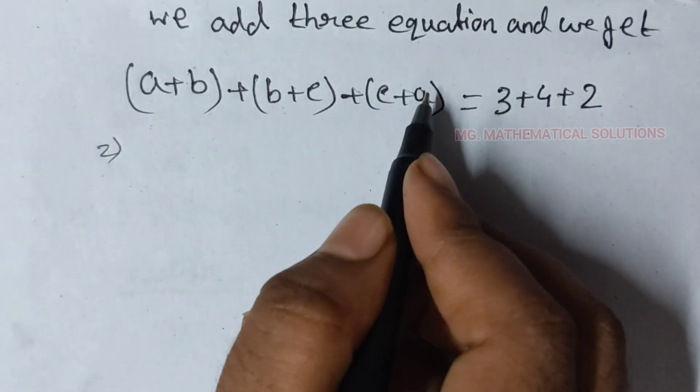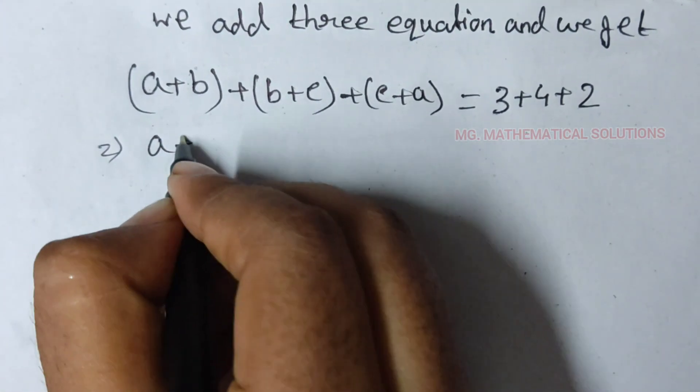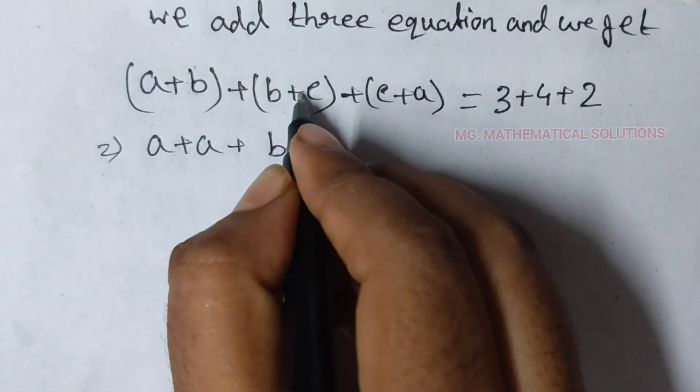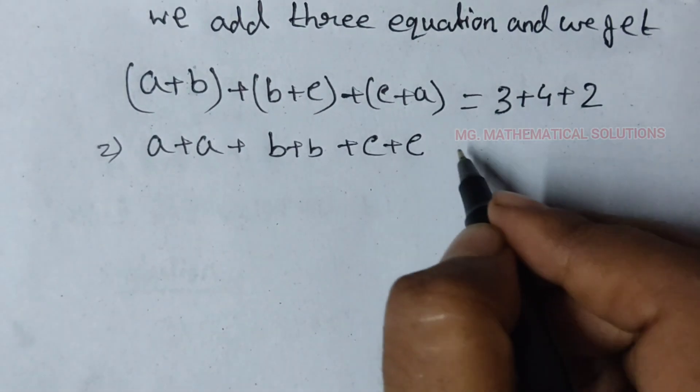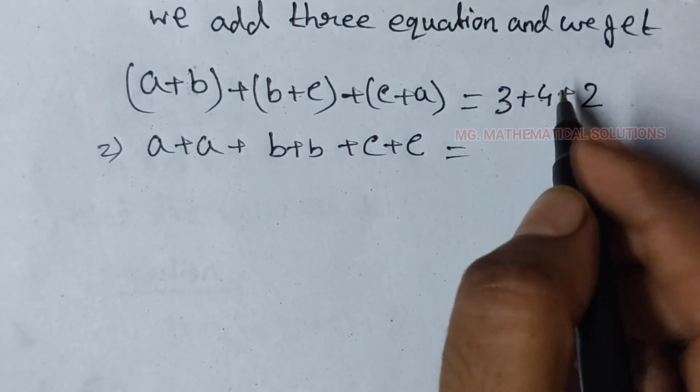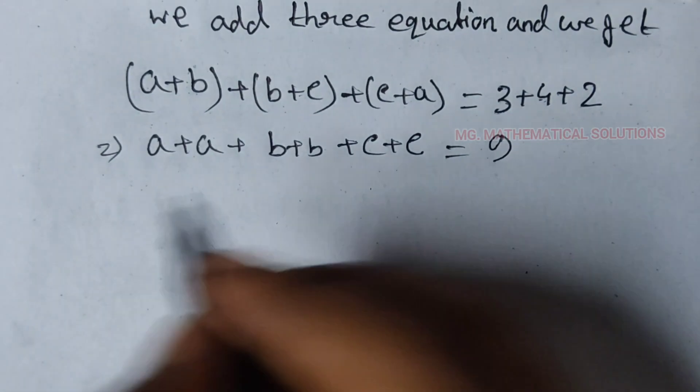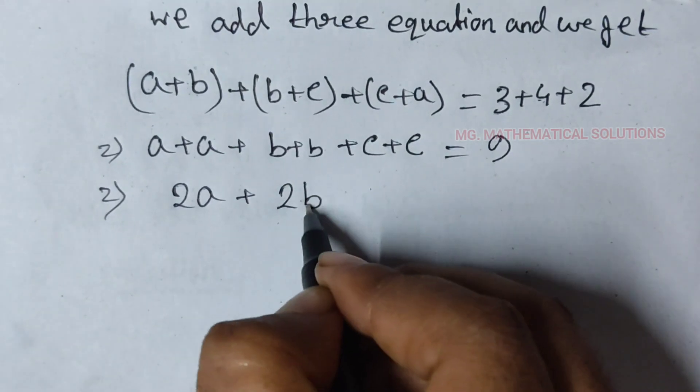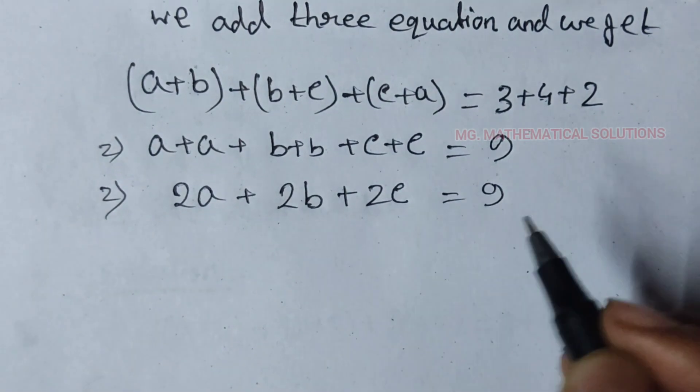Now, a plus a plus b plus b plus c plus c equal to 3 plus 4 is 7, 7 plus 2 is 9. So 2a plus 2b plus 2c equal to 9.